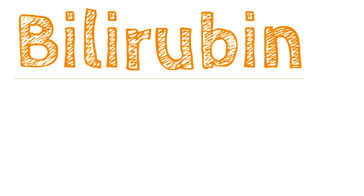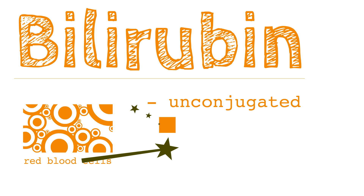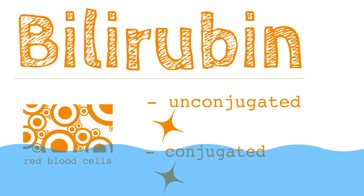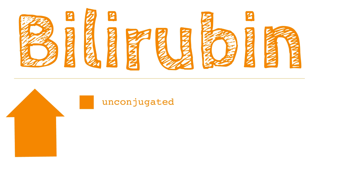Bilirubin comes from the heme breakdown in red blood cells. It can either be unconjugated, which binds with albumin to circulate the body and is then taken up by hepatocytes. Or it can be conjugated, which is created in the liver. Conjugated bilirubin is water-soluble and is then excreted in the urine. Total and conjugated bilirubin can be measured directly; however, unconjugated bilirubin must be calculated from the two aforementioned values.